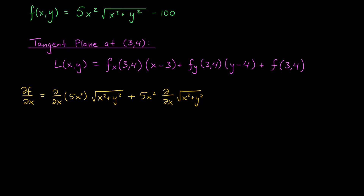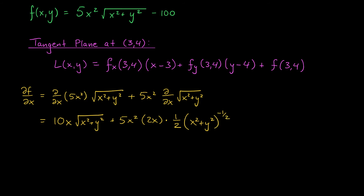Let's differentiate. The derivative of the first term is 10X, and then we have √(X²+Y²). The next term is 5X², and then we use the chain rule: the derivative of the inside with respect to X is 2X, and the derivative of the outside (the square root function) is one half times the inside raised to the power of negative one half. We can clean this up by canceling the twos, leaving us with 5X³ divided by √(X²+Y²).